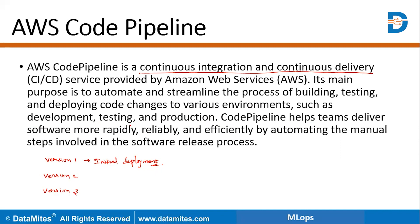CodePipeline helps teams deliver software more rapidly and reliably because you are automating the process — it's not required to do it manually again and again. Once you give the code to the CodePipeline, if you are making any changes, everything is going to be done automatically and streamlined. This is the speciality of AWS CodePipeline, and we say it's a continuous integration and continuous delivery process. Thank you everyone, I hope it's clear.